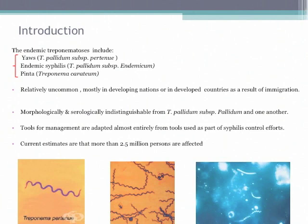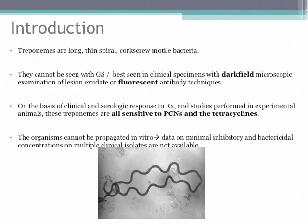Currently, the estimate is 2.5 million people that are affected by these three diseases. There are about 460,000 infectious cases, but 2.5 million are basically infected. As you can see, you can't tell the difference between the three of them — they all look alike.